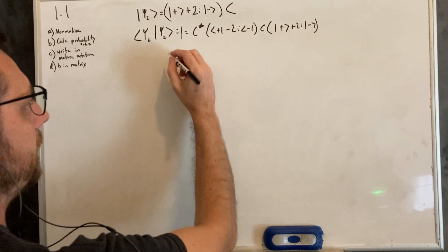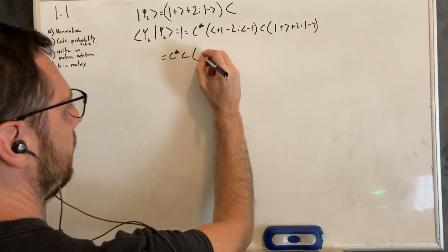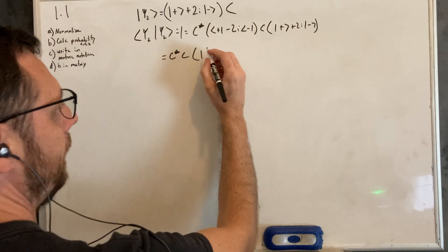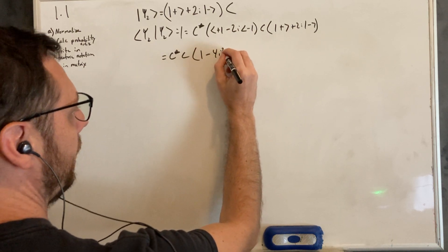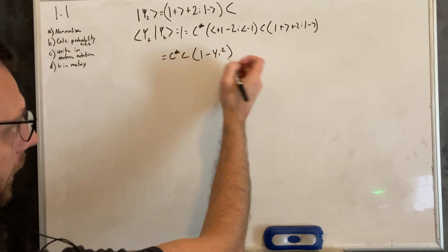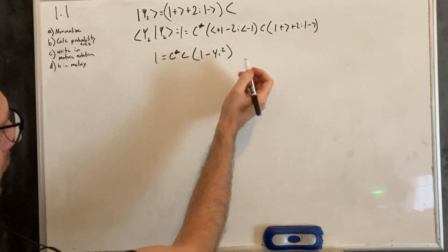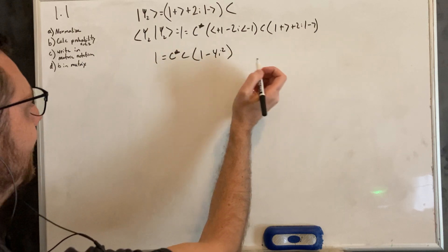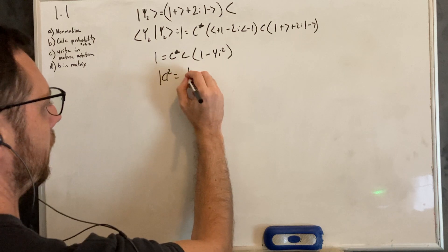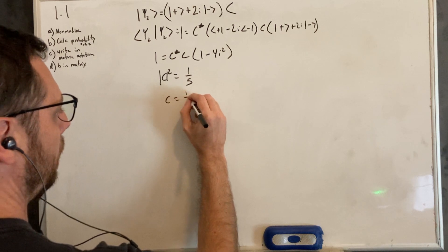We can pull out our c's, so we have c star times c. We have our plus and our plus, that's going to be one. We have our negative 2i and our positive 2i, so that's going to be minus 4i squared. i squared is going to be negative 1, that cancels out the negative. So it'll be 1 plus 4, which is 5. So c squared is going to be equal to 1 over 5, and then c is going to be 1 over square root of 5.